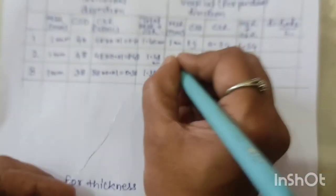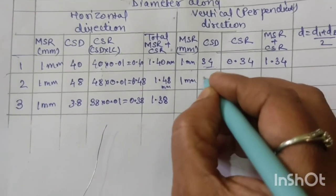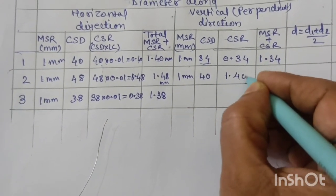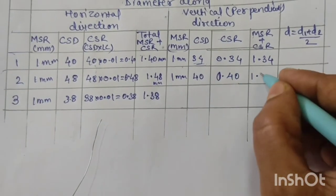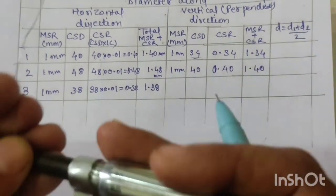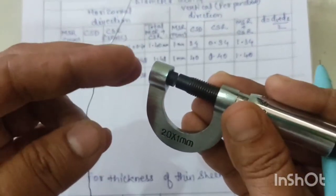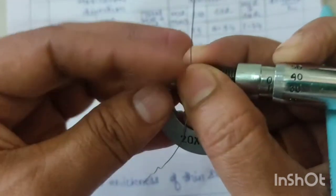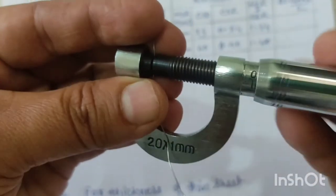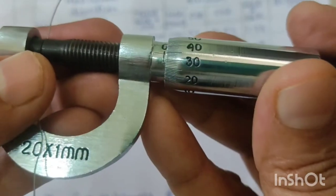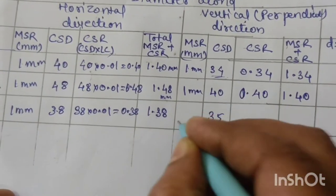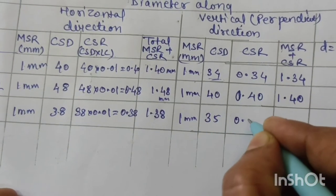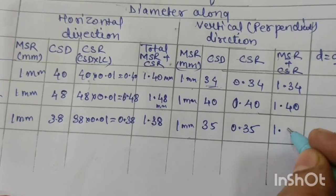At a second perpendicular position, the CSD is 40, MSR is 1 mm. So CSR = 0.40 mm and total reading is 1.40 mm. At a third perpendicular position, the CSD is 35, MSR is 1 mm. CSR = 0.35 mm and total reading is 1.35 mm.